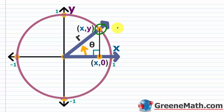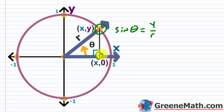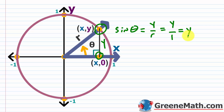If we wanted to find sine of theta, we know the definition is y over r, or opposite over hypotenuse. The vertical distance from the x-axis up to the point is y. The radius r, which is our hypotenuse, equals 1 because we're on the unit circle. So sine of theta is y over r, which is y over 1, which is just y. Sine of theta equals the y-coordinate of this point.